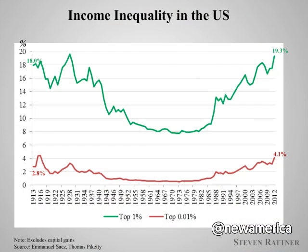Probably something many of you have seen before. If you look at the red line down below, that is the top 0.01% — the 16,000 households with the highest income. To be in that group in 2012, you needed to have a little over $7 million of income and $21 million of average income. And you can see that that group has gotten back to and even exceeded where it was at any point in our history.